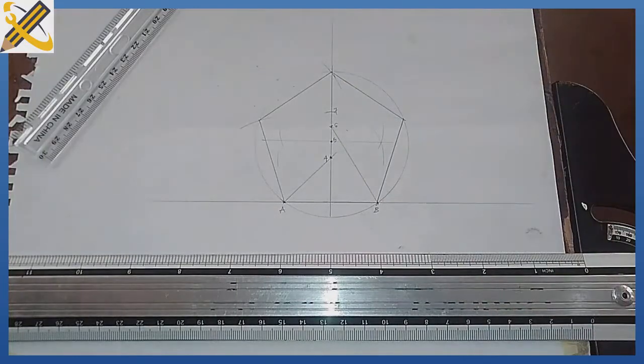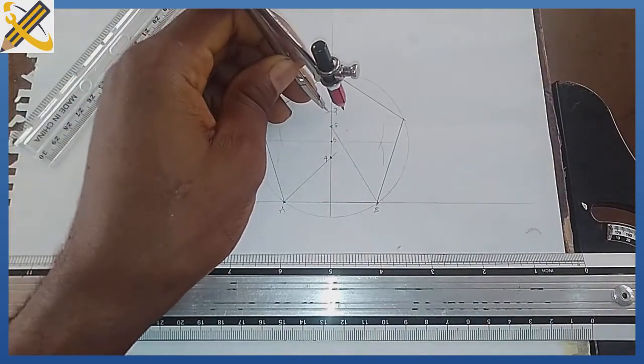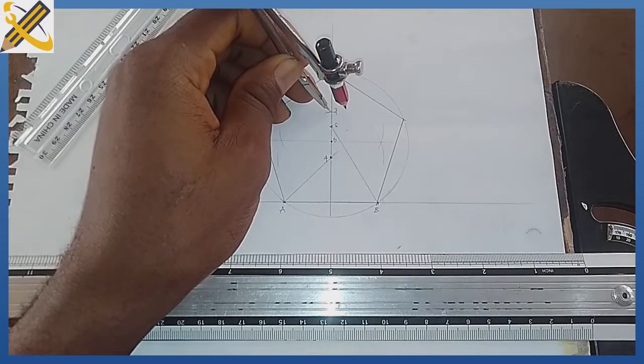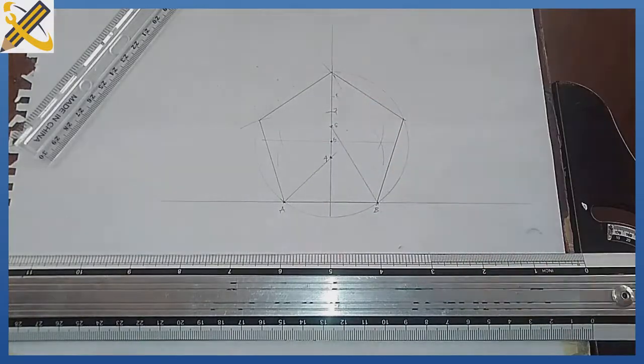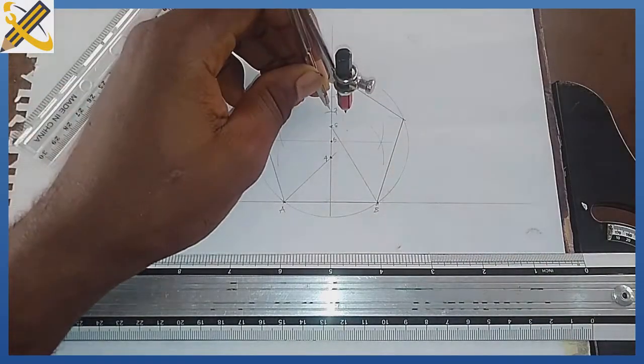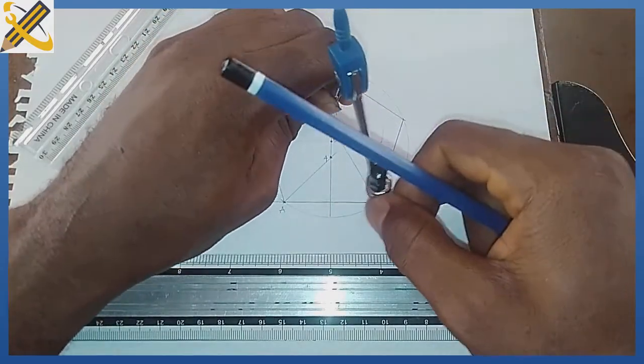To construct an octagon with that same distance of point 5 to 4 or 5 to 6, place on point 7, strike another arc, that's point 8. Then place the compass on point 7, extend it to either A or B, then draw the circle and mark it out.